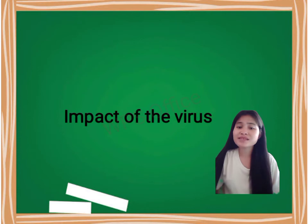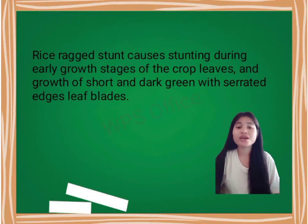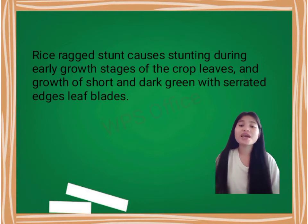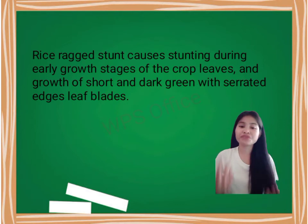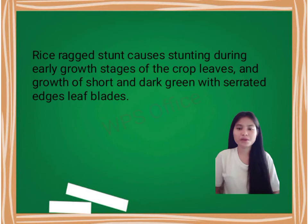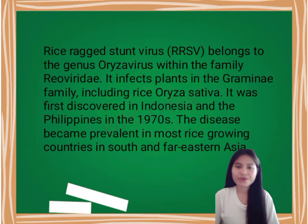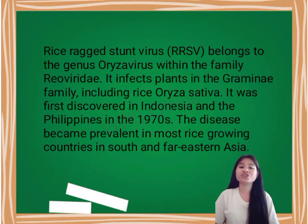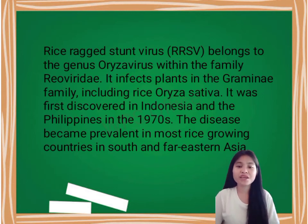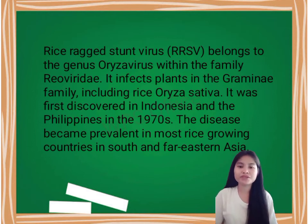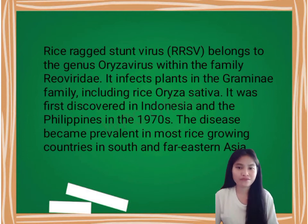Rice Ragged Stunt Virus causes stunting during early growth stages of the crop, with leaves short and dark green with serrated leaf blade edges. Rice Ragged Stunt Virus belongs to the genus Oryzavirus within the family Reoviridae. It infects plants in the Gramineae family, including rice Oryza sativa.